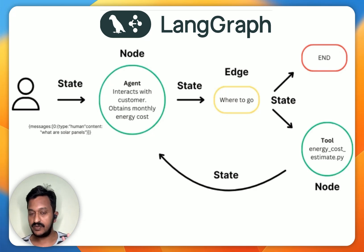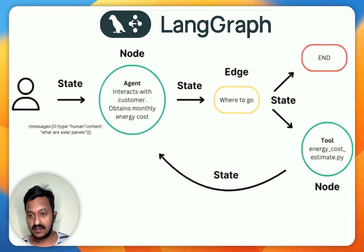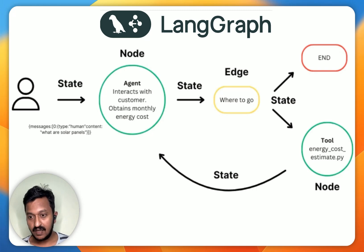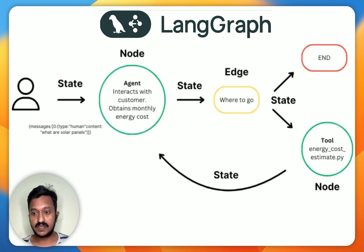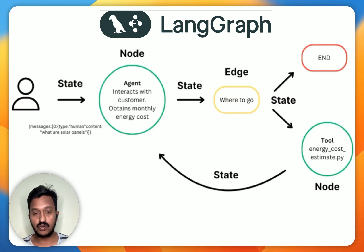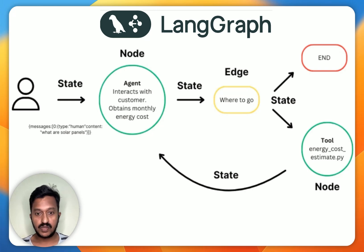As you can see in the image, you need to understand three things here: state, node, and edge. State represents the context or memory that is maintained and updated as the computation progresses. Nodes serve as the building blocks of the graph, representing individual computation steps or functions. Edges are nothing but the connected nodes within the graph, defining the flow of computation from one step to the next.